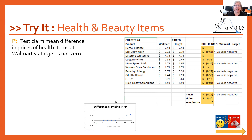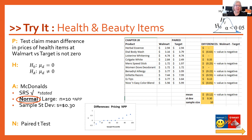Our null hypothesis is that the difference of prices is zero; the alternative is that the difference of prices is not zero. For assumptions and conditions, we are only looking at the differences column, not the Walmart and Target columns separately. Random sample was stated in the problem. Our sample size is 10, so not large enough for the central limit theorem. But I took the highlighted differences column and made a normal probability plot — it's a little bumpy but straight enough to assume normality. Our sample standard deviation is 30 cents. Having two data values for each item is what gives us the paired t-test.